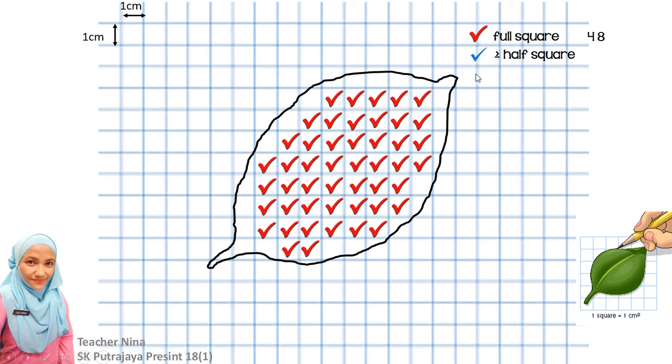Now, let's put the blue check marks on the squares that is half or more than half covered. Okay, let's start. 1, 2, 3, 4, 5, 6, 7, 8, 9, 10, 11, 12, 13, 14, 15, 16, 17, 18, 19. I think that's about it, yeah? So, write it down here, and then, what we do is, we add these two numbers, and we get 67.